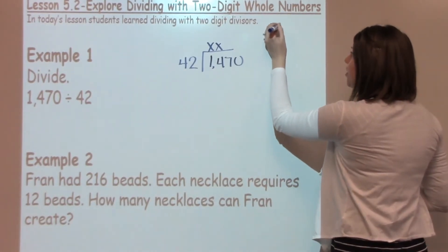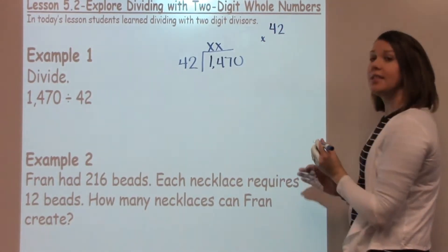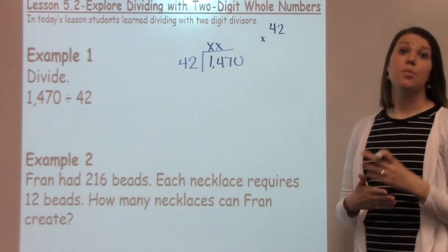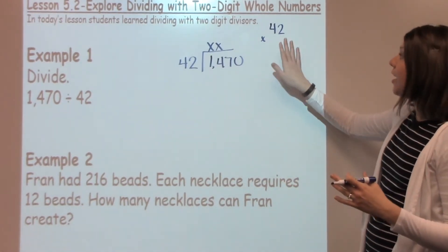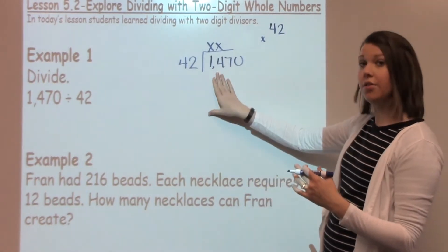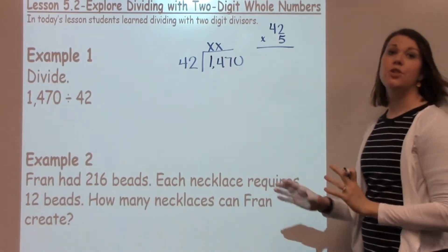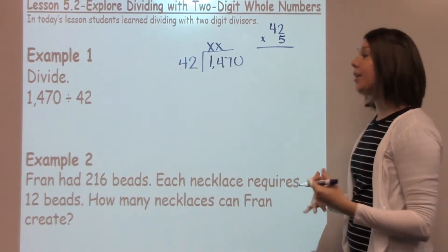What we encourage the students to do is take a little piece of paper off to the side or on the side of their notebook paper where they're working. They just are going to need to do some multiplication facts to be able to figure out how many 42s are going to get them close to 147. I like to start with the number 5 because it's nice in the middle and it kind of gives you a spot if you need to go up or down.